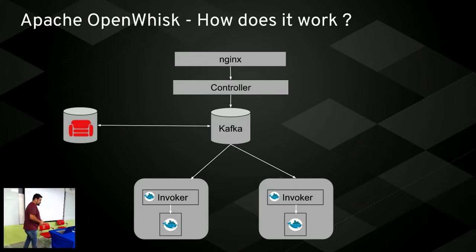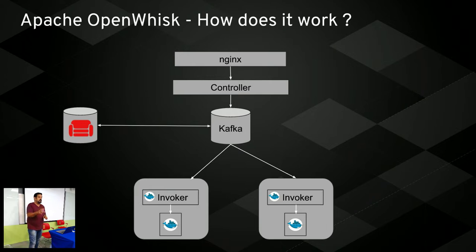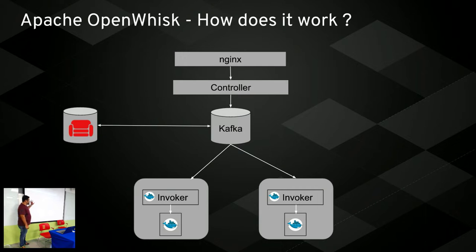OpenWhisk has several components. There's a frontend which serves as a REST interface, a controller that controls everything inside the application, a Kafka engine which schedules messages to get the action's input, and CouchDB which stores authentication information, action information, and serves as the database repository for OpenWhisk.